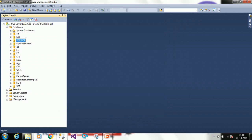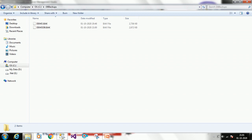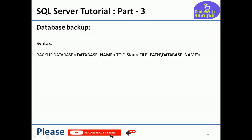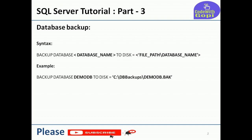Now we go to see that demo_db backup is completed. Like this we can take the database backup. We can also take a backup through a query. The syntax is: BACKUP is the keyword, DATABASE is the keyword, then provide the database name you want to back up, TO DISK, and provide the path where you want to save. For example: BACKUP DATABASE DemoDB TO DISK = 'C:\DBBackups\DemoDB.bak'. The .bak extension is always used for backup files.